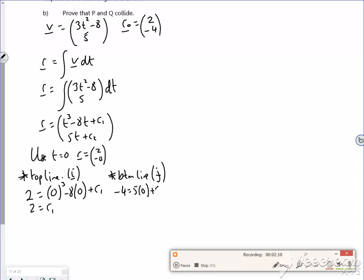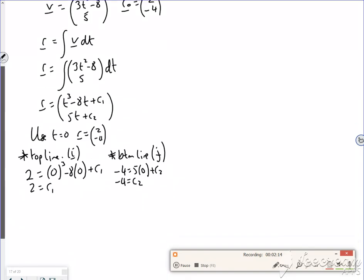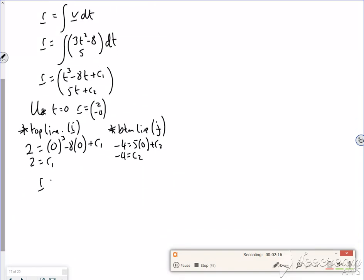That's 5 lots of 0 plus c2. So minus 4 is c2. So my r is t cubed minus 8t plus 2. And what was it? 5t minus 4. Yeah, that's it. And that's included that move then, which is nice.